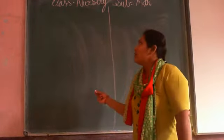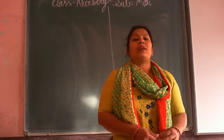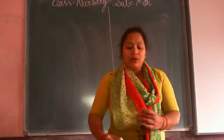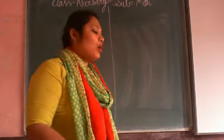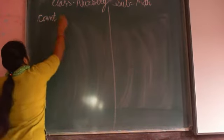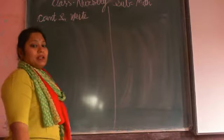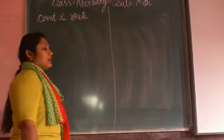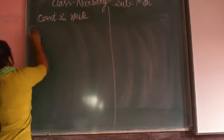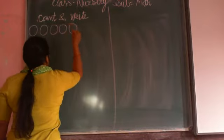First, you know count and write. Count and write. Here I am making few things. Which shape is this? This is a circle. Very good. Count and write.